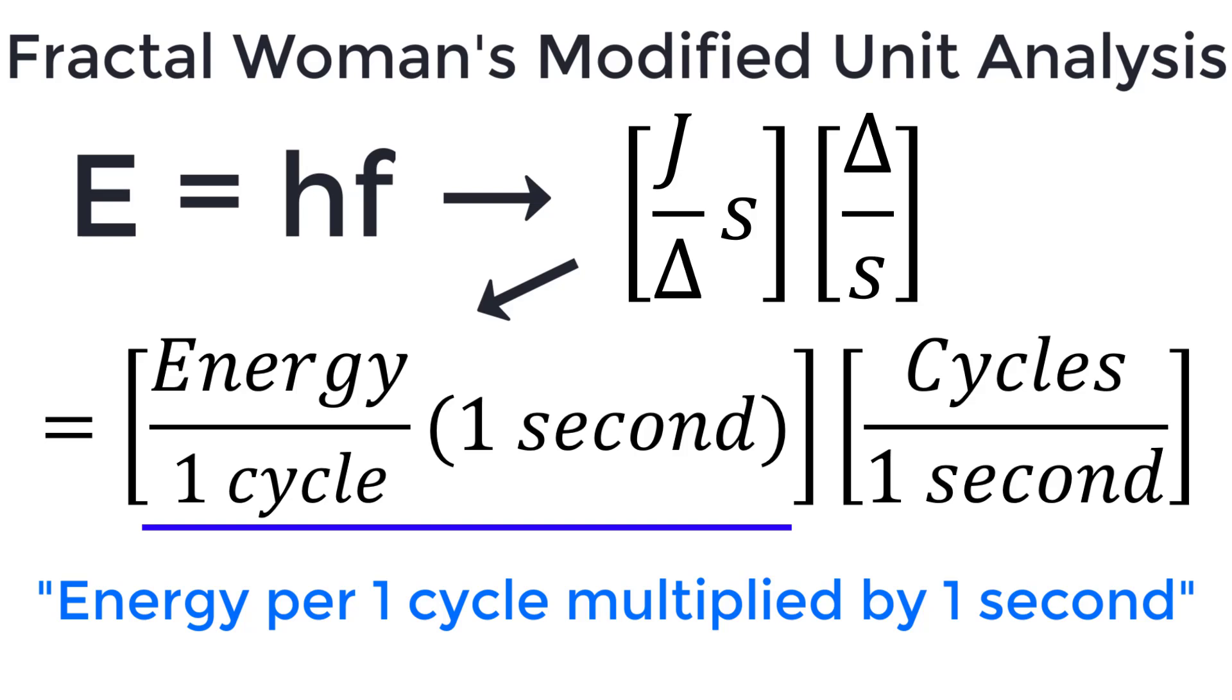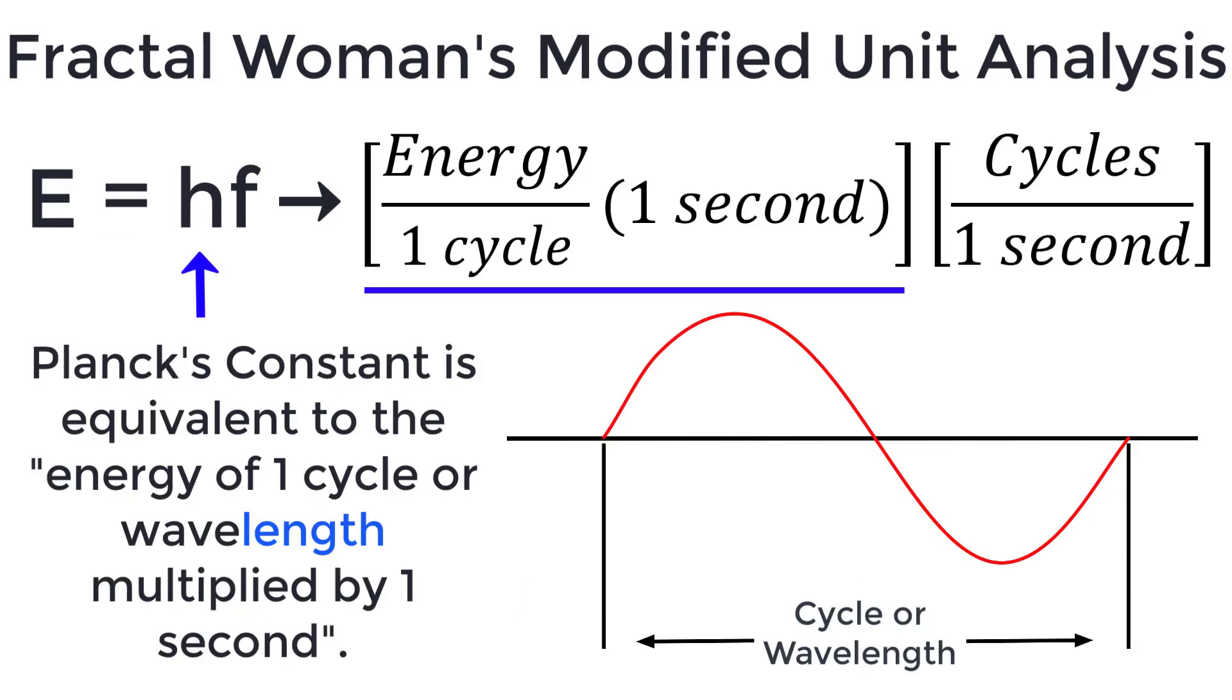Accounting for the units of cycles reveals that Planck's constant can be interpreted as being the energy of one cycle multiplied by one second. The term one second appears to be an arbitrary construct. Since one cycle of an electromagnetic wave is just its wavelength, this means Planck's constant is equivalent to the energy of one cycle or wavelength multiplied by one second.